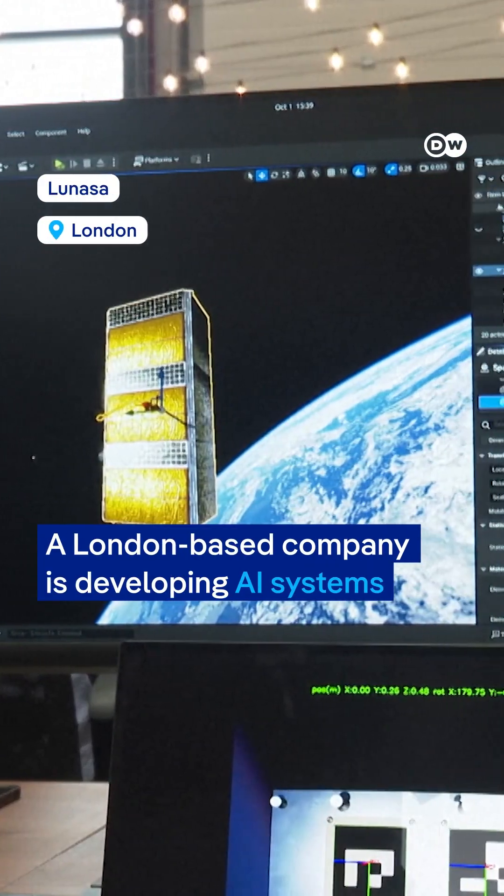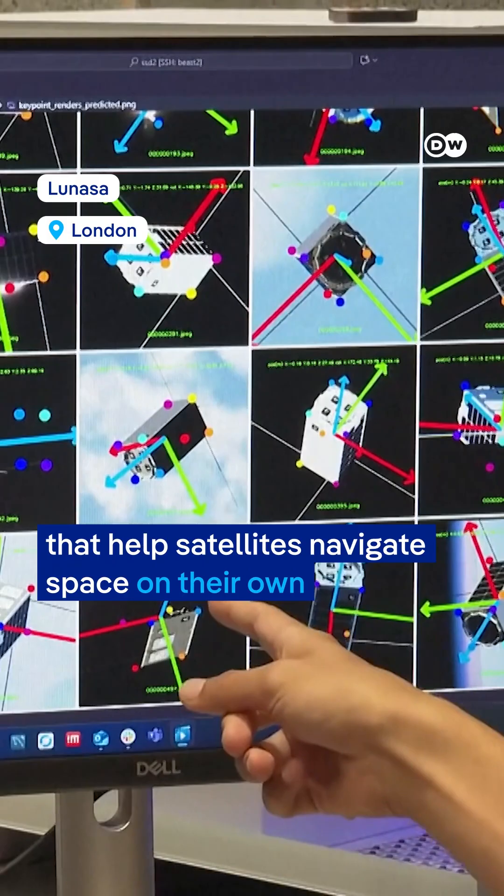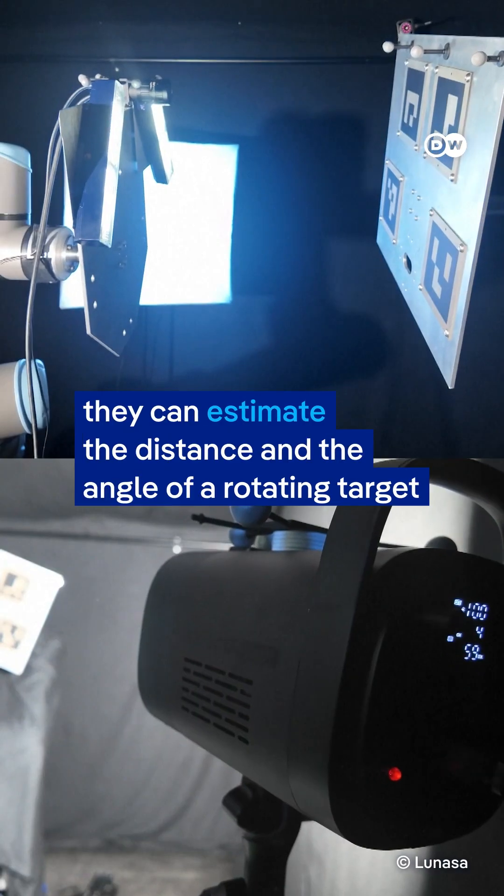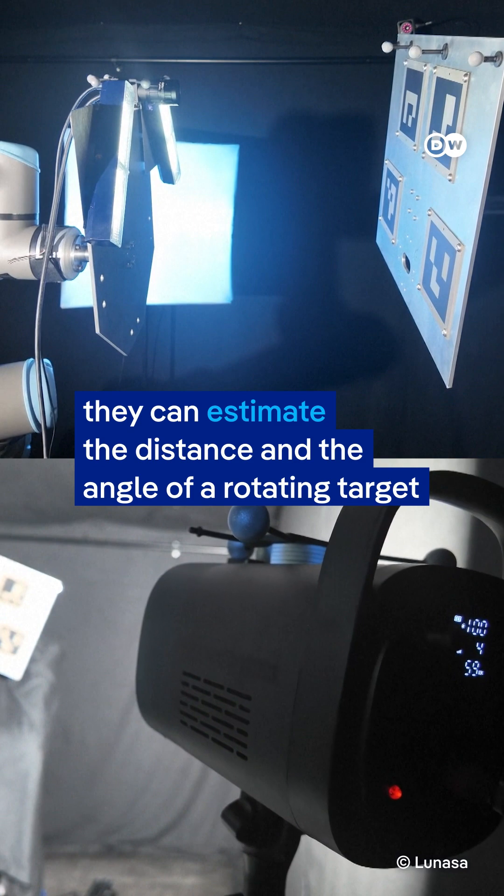A London-based company is developing AI systems that help satellites navigate space on their own. Using a single camera, they can estimate the distance and the angle of a rotating target.